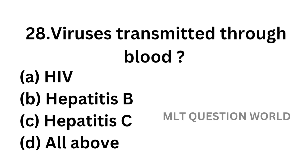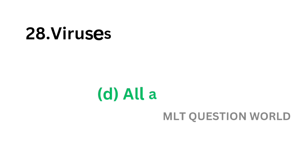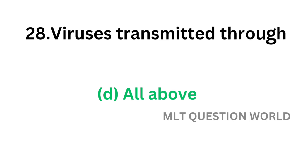Question number 28. Viruses transmitted through blood: option A, HIV; option B, Hepatitis B; option C, Hepatitis C; option D, All of the above. The correct answer is option D, All of the above. HIV, HBV, and HCV are all transmitted through blood.